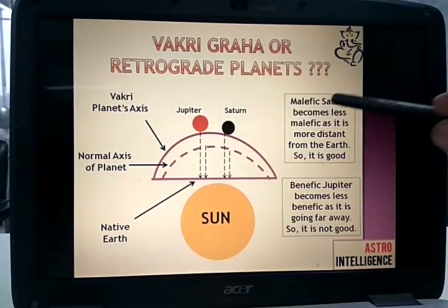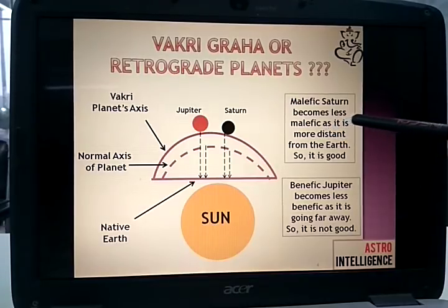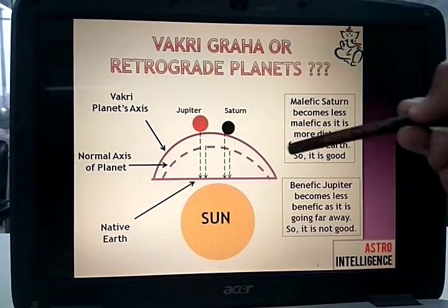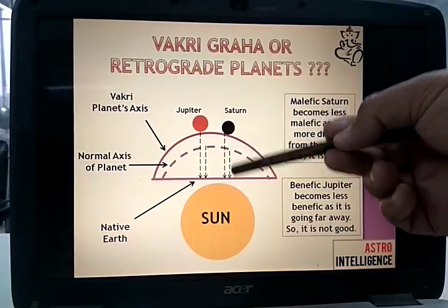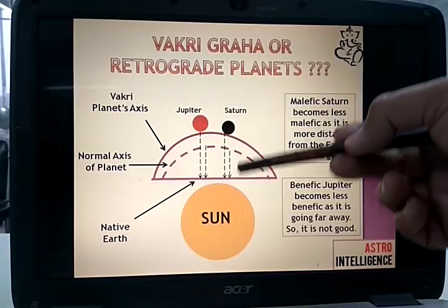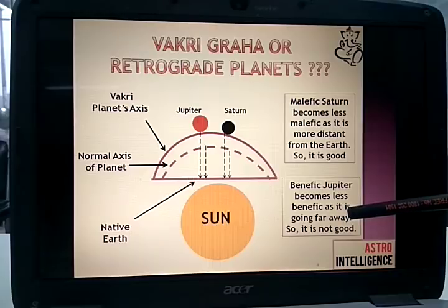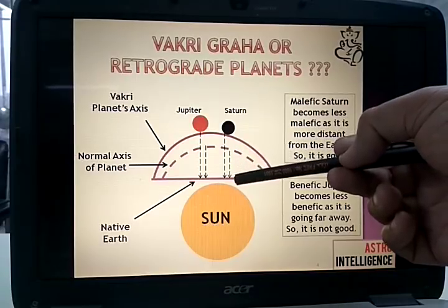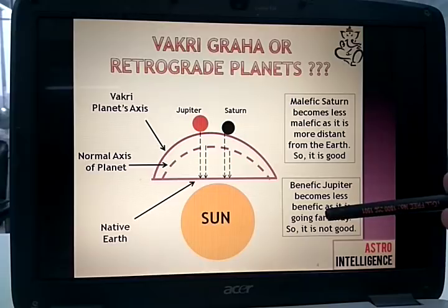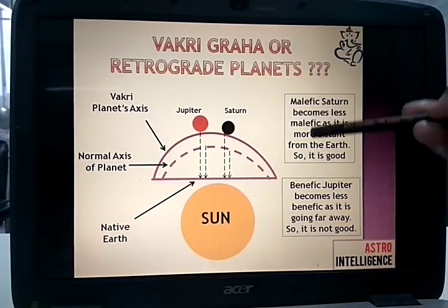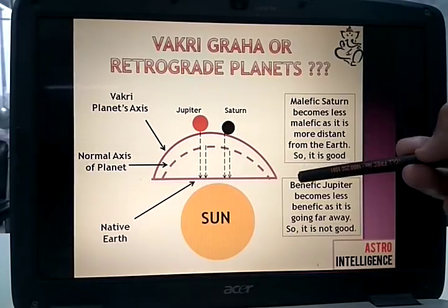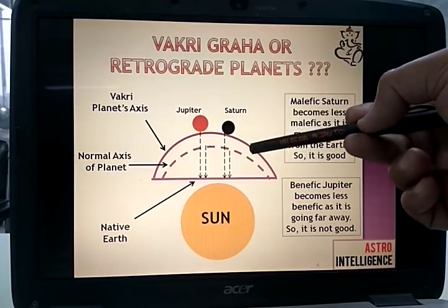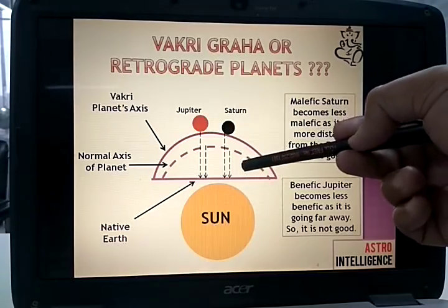Suppose Saturn in its normal motion is closer to your earth. But once it is Vakri, that means it has gone far away from your earth. The malefic Saturn becomes less malefic as it is more distant from the earth — so in a way it is good. When Saturn goes away from you, the maleficence or the Karkatvas or the expression of Saturn is diminished because of the distance. When it is nearer to you, the effect will be more; when it goes away, the effect will be less. So indirectly maleficence decreases and retrogression becomes good for malefic planets.